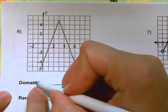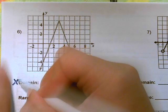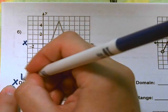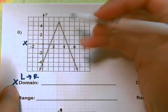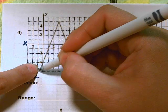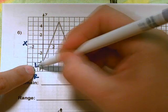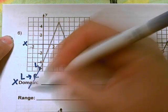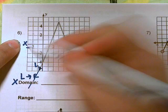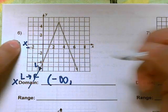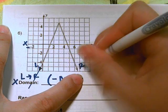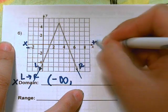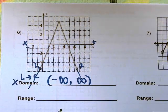We're going to find the domain. Domain is all the x-values, so we look at the x-axis, which goes left to right. On the left side there's an arrow, so the graph keeps going — that's negative infinity. On the right side it also keeps going, so the domain is all real numbers.